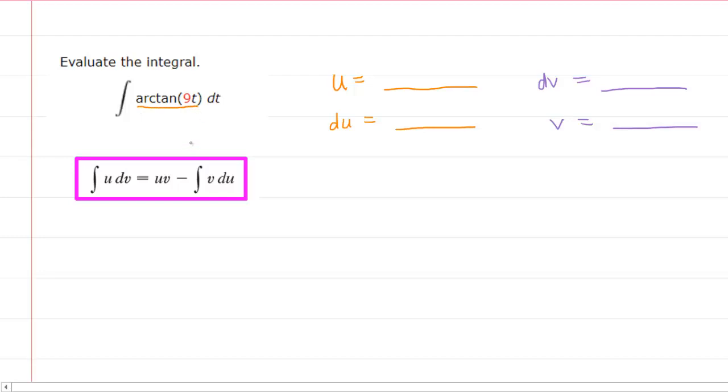There isn't really another function here unless you want to call 1 another function. In those cases, it usually works out that you will let the u equal that sole function. In other words, we're going to let u equal the arctan of 9t. Therefore, the dv will be the rest of the expression that you're trying to integrate. In this case, the rest of the expression would just be dt.